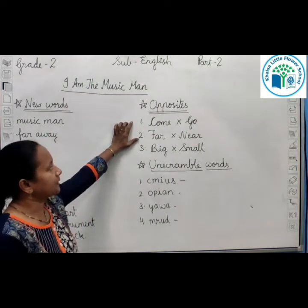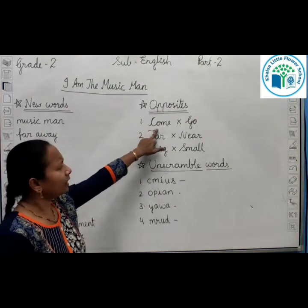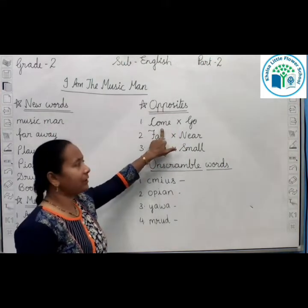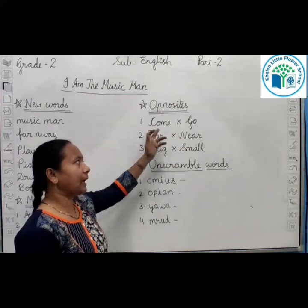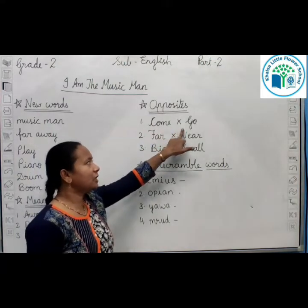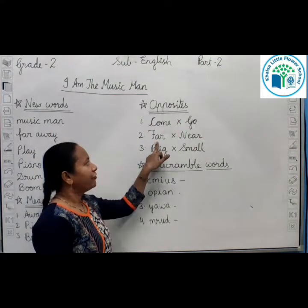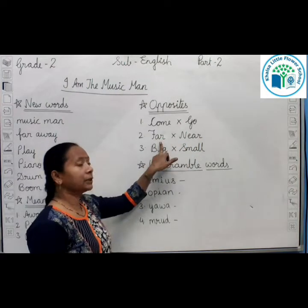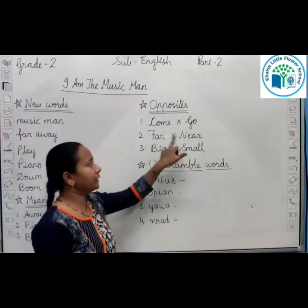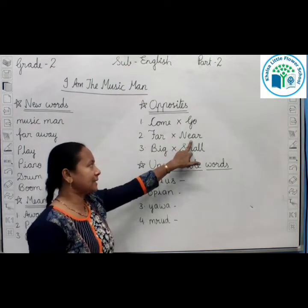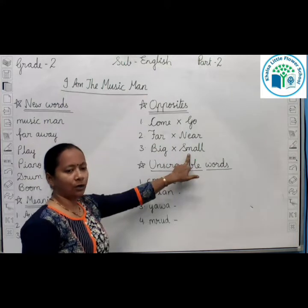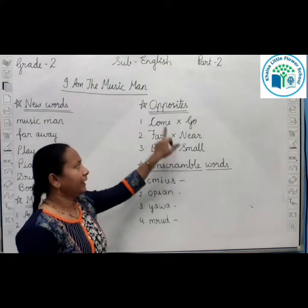Next exercise: opposites. Come — go. These are very easy words. Come means aana, go means jaana. Far — near. Far means door, near means paas. Big — small. These are the three pairs of opposite words.